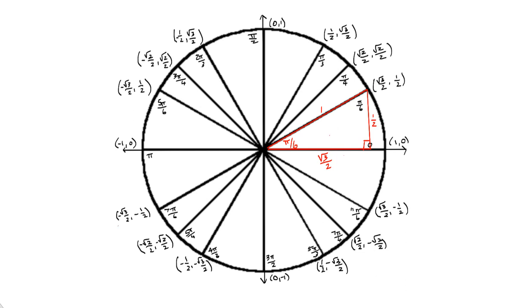What I want you to remember now is what we learned about right triangle trigonometry — the definitions of sine, cosine, and tangent of an angle in a right triangle. The sine of an angle was opposite over hypotenuse. Cosine of an angle is adjacent over hypotenuse. And tangent is opposite over adjacent.